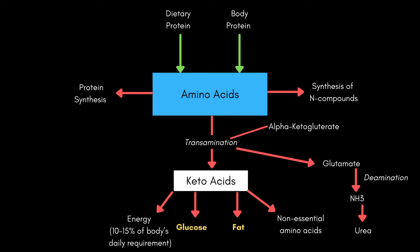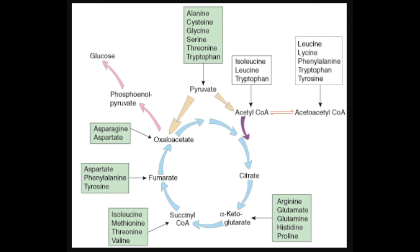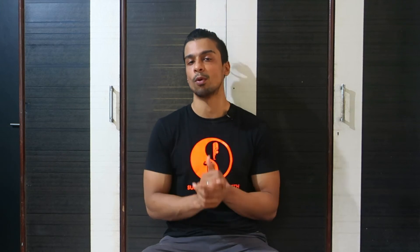Another pathway of protein loss is conversion into carbohydrates and fats. If you consume more protein than your body needs for structural purposes, those excess amino acids cannot be stored. Glucogenic amino acids are converted into glucose (carbohydrates), and ketogenic amino acids are converted into fats. So over-consuming protein beyond what's needed for muscle synthesis provides no additional structural benefit — the excess is simply converted into energy or stored as fat.